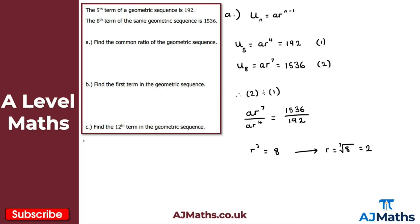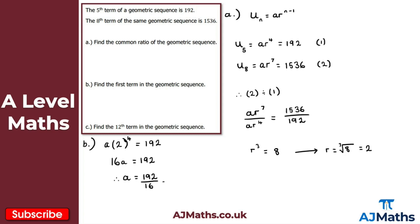For part b we need to find the first term. We know r = 2, so we substitute into equation one: a × 2⁴ = 192. Since 2⁴ = 16, we get 16a = 192. Dividing both sides by 16 gives a = 192 ÷ 16 = 12.